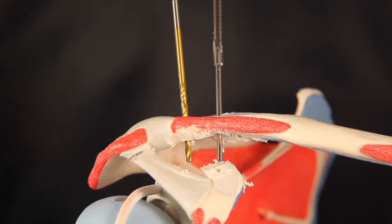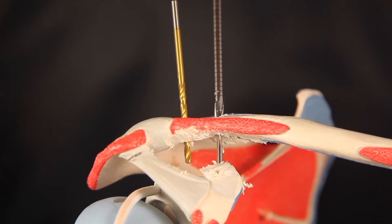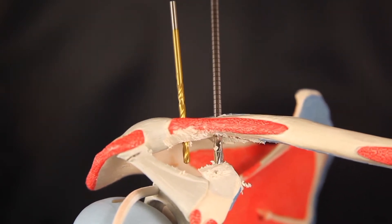A 4.5 millimeter endobutton drill is then used to ream the initial drill hole all the way through the base of the coracoid.